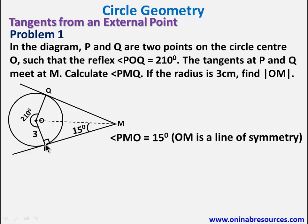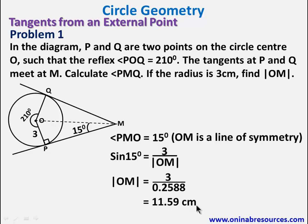We are going to apply trigonometric ratios of angles. So this is a given angle. So here is opposite and we are looking for hypotenuse. That's sine 15 degrees is equal to opposite 3 over OM. Making OM the subject of the relation, we have 3 over sine 15 degrees. And the value of sine 15 degrees is 0.2588. So from our calculator, we have it as 11.59 centimeters. So that's the end of solution to problem 1.